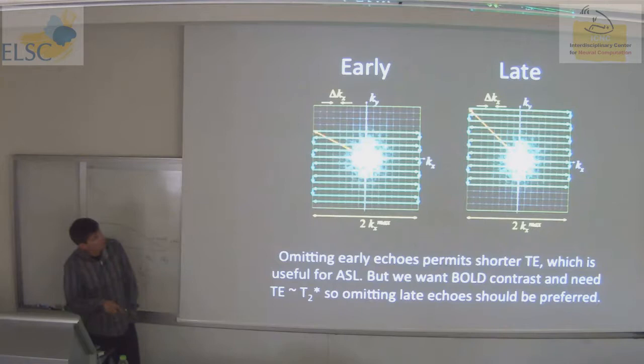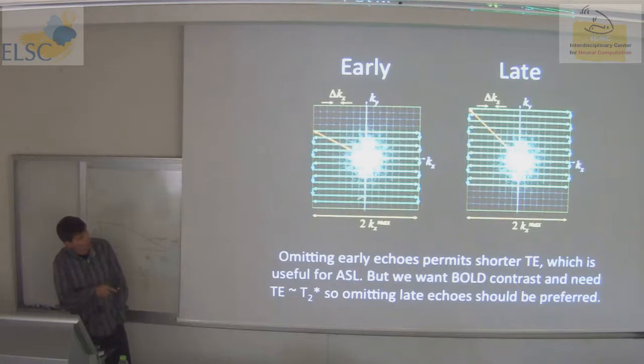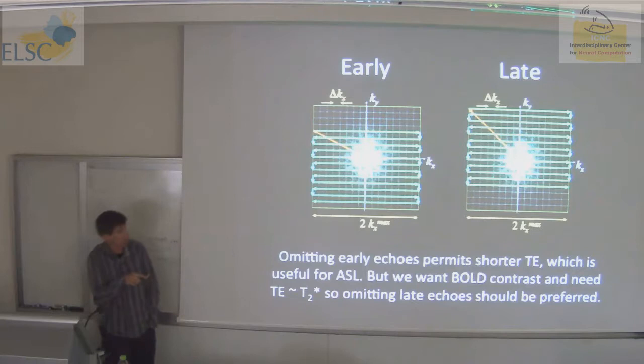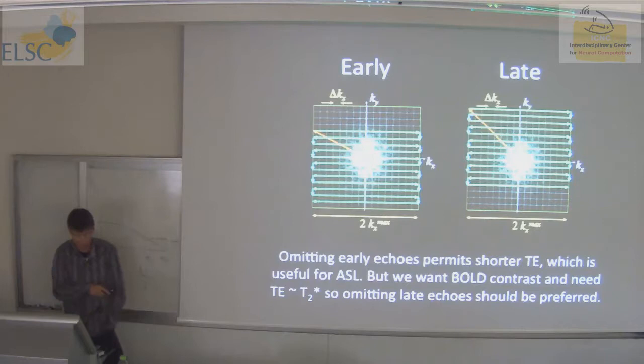If we want to omit the early echoes, we simply start our journey in k-space and go partway across the k-space plane. The traditional way — the one that comes standard on your scanner when you enable the partial Fourier button — omits the early echoes by default. The version that's not standard is the one that omits the late echoes, and that can be a useful tool if you just want to add a few slices per TR.